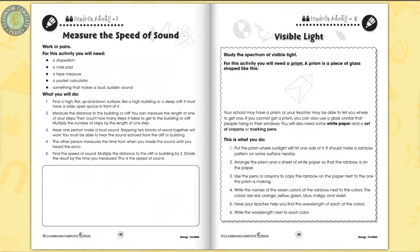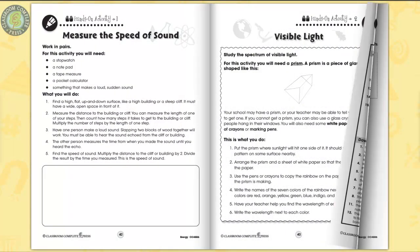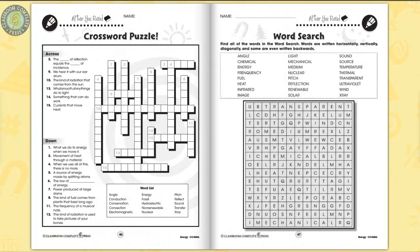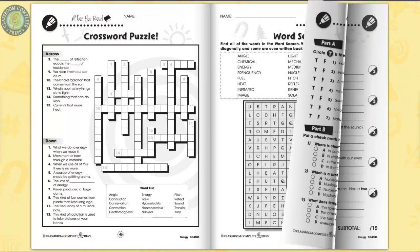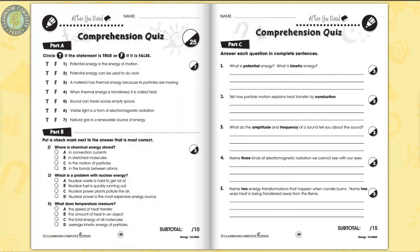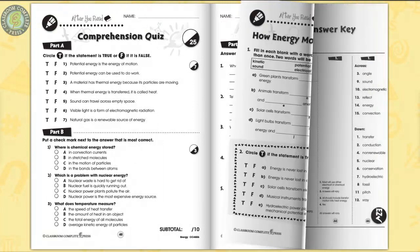Measure the speed of sound in a group experiment. Differentiated comprehension skills are measured by a crossword and word search puzzle, then a three-part comprehension quiz.